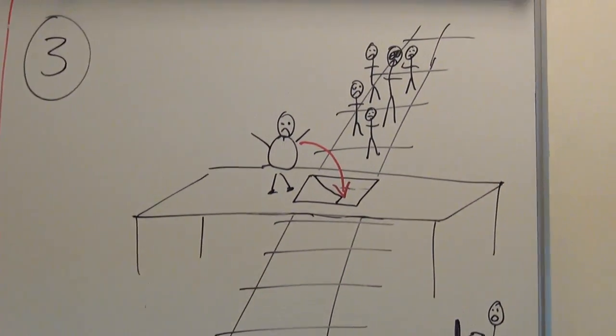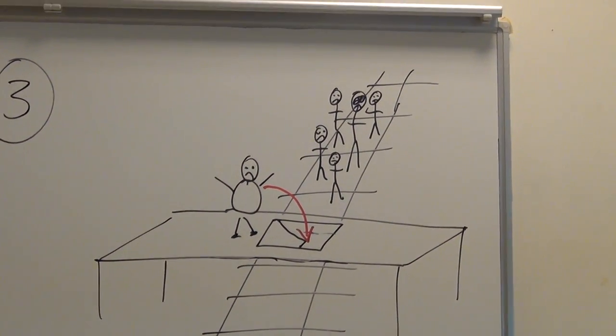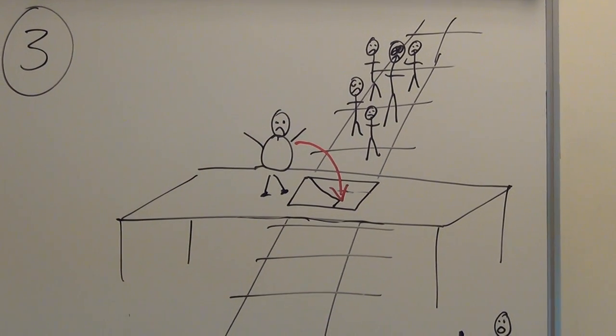If you pull the lever, one person dies and not five. What do you do?